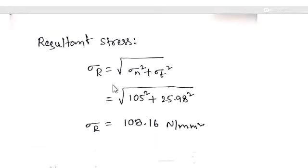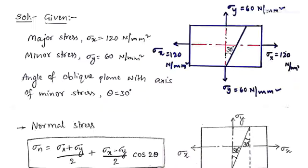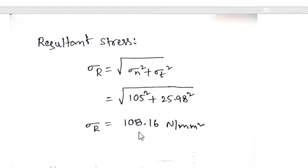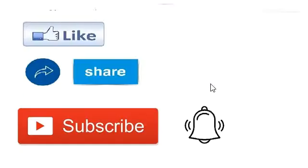The resultant stress is given by the formula σr = √(σn² + σt²). The normal stress is perpendicular to the oblique plane and the tangential stress acts along the plane. The resultant of these two gives σr = √(105² + 25.98²), which simplifies to a resultant stress on the oblique plane of 108.16 N/mm².